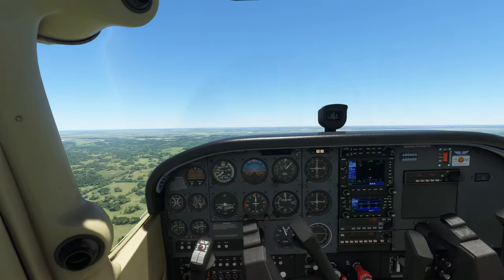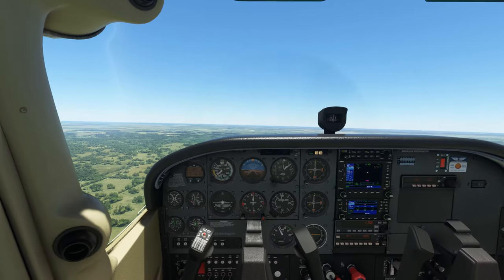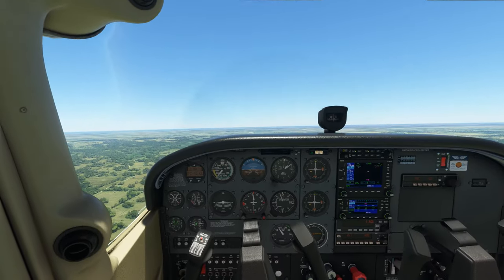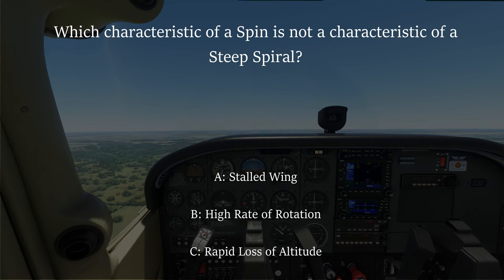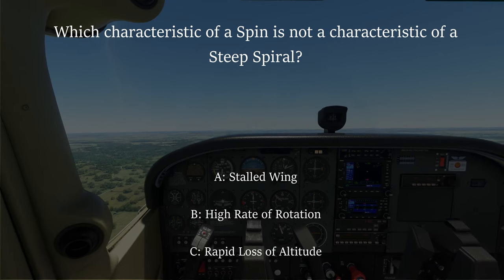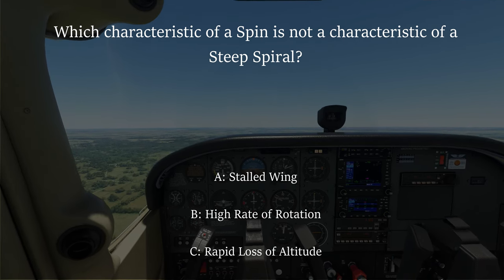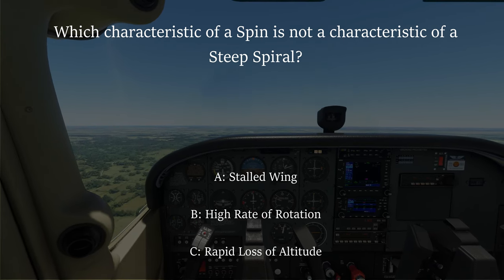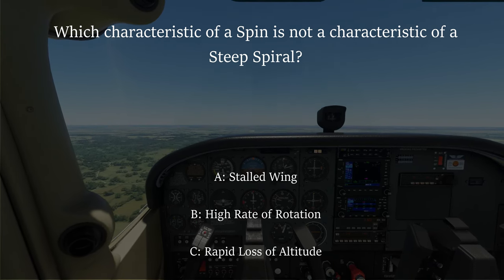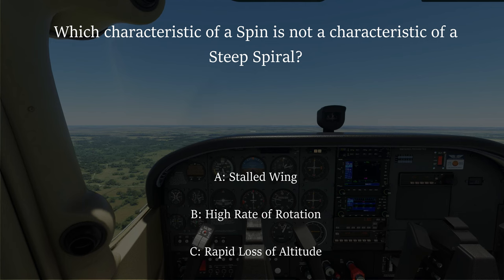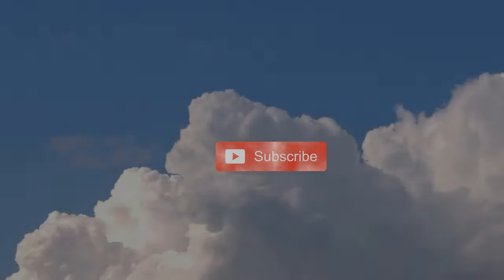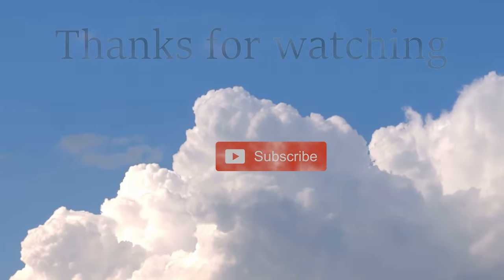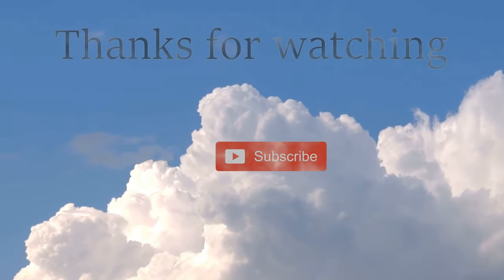This is because a stalled condition has never been entered. So the answer to the question — which characteristic of a spin is not a characteristic of a steep spiral — is A: a stalled wing. Thanks for watching and click here for another Theory Quickie.